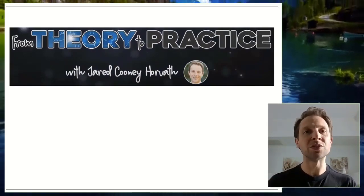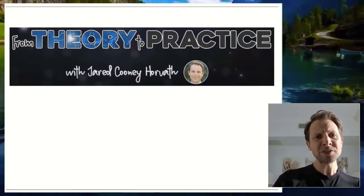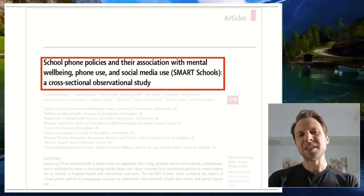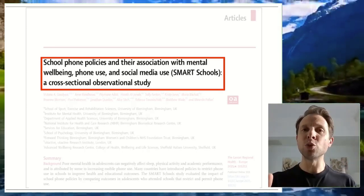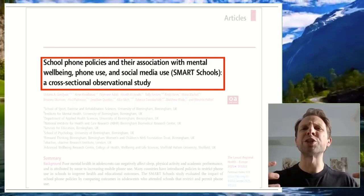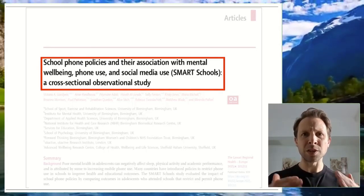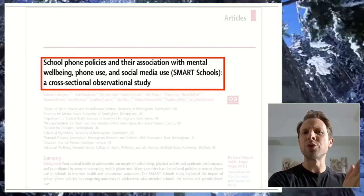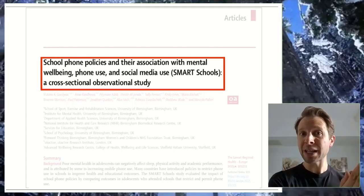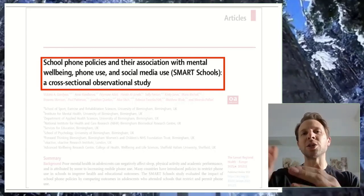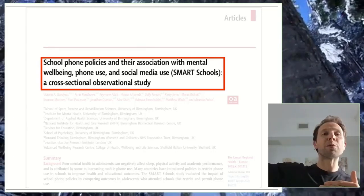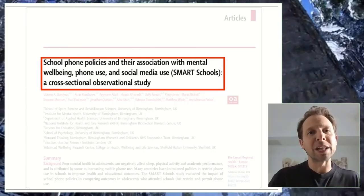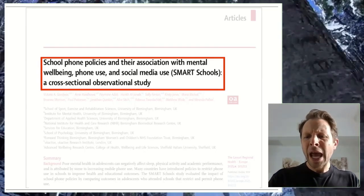The paper I've selected is called School Phone Policies and Their Association with Mental Well-Being. This study compared 30 different schools that have varying levels of restrictive cell phone policies. Some schools say you can use a cell phone during recess and lunch but not during class. Others said you have to keep the cell phone in your bag. And still others said you have to put it in a pouch on the wall at the beginning of every class. So different levels of restriction. And what did they find?